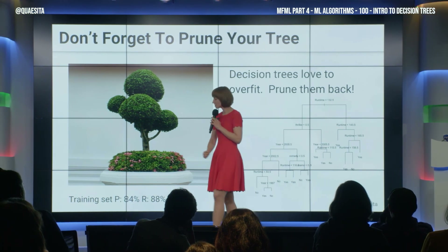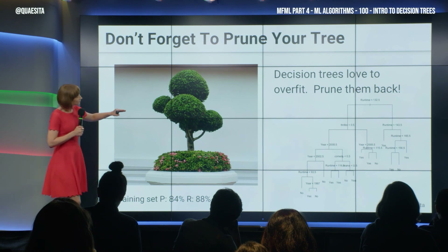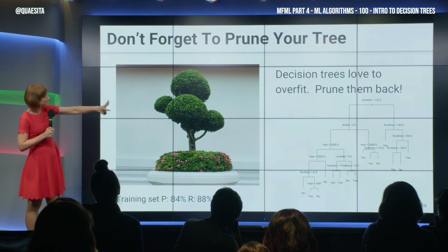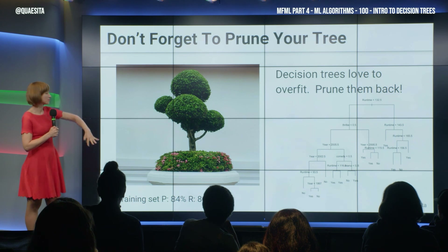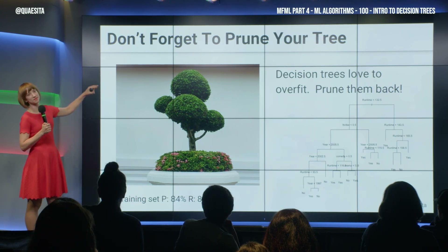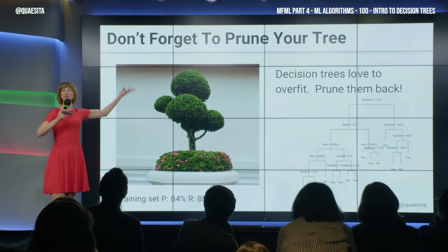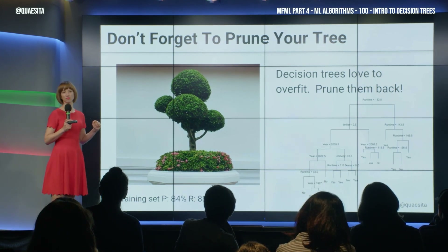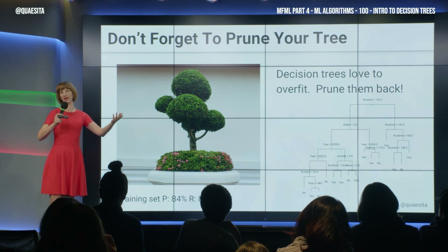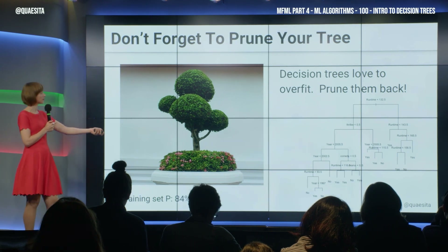Even though it works really well in training — look at 84% precision, 88% recall. Because they tend to be implemented so they make you these big convoluted rules, you will need to run a pruning algorithm to snip, snip, snip back their enthusiasm. You'll say something like, no more than this many nodes. How do you pick how many nodes? Well, it is a hyperparameter that you're going to need to tune. So that's why you do that tuning step.